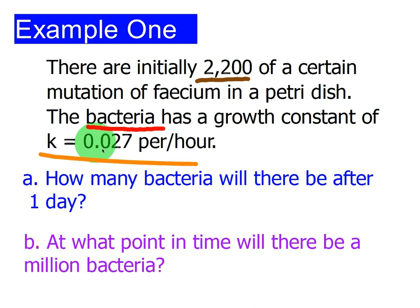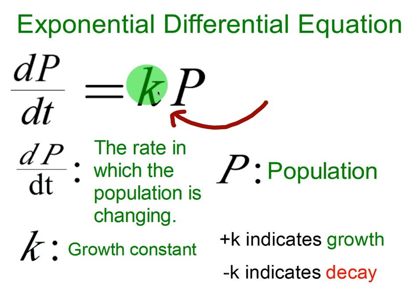We've already talked about the fact that K represents the growth constant, which means you multiply that by the current amount, in this case bacteria, to give you the rate in which that bacteria is increasing.